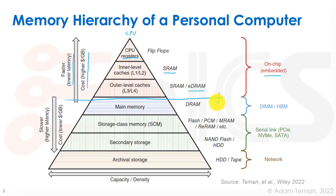As we go down in the memory hierarchy, latency increases and we get slower, but we reduce cost as well. The real speed problem comes when we go off-chip through external buses and IO circuits to a different chip integrated on the board or in the package. Our main memory there is DRAM, the dynamic RAM, which has to be fabricated in a special fab. There we can get gigabytes on a chip or on a system — what we call a DIMM — or high bandwidth memory with multiple stacks of DRAMs. DRAM is the main memory of our computer, and when computer architects discuss memory, they are usually talking about DRAM. However, DRAM is a volatile memory — it's expensive and loses its data when power is turned off.